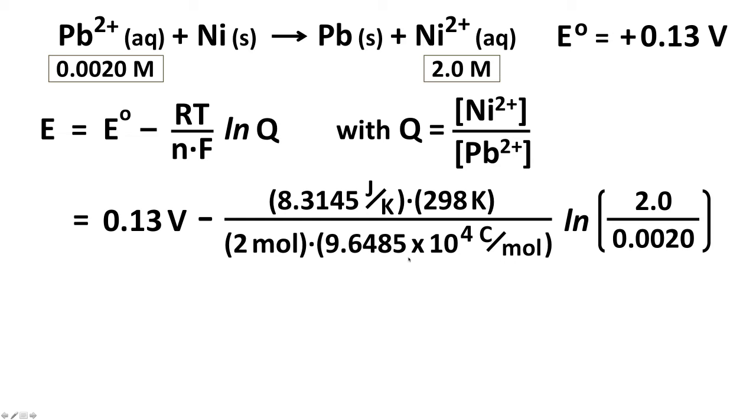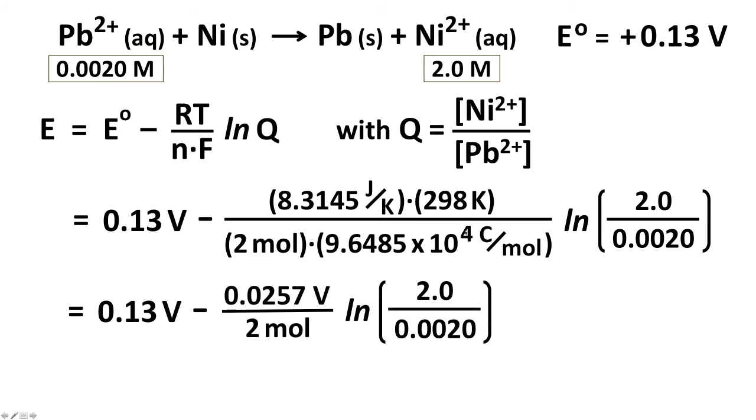Notice that when we do our calculations, joules per Kelvin times Kelvin, the Kelvin cancel. Two moles times this number of Coulombs per mole, the moles cancel. And then joule per Coulomb is a volt. 8.3145 J/K times 298 K divided by 9.6485 times 10⁴ C/mol and two moles, just those three things combined together works out to be 0.0257.